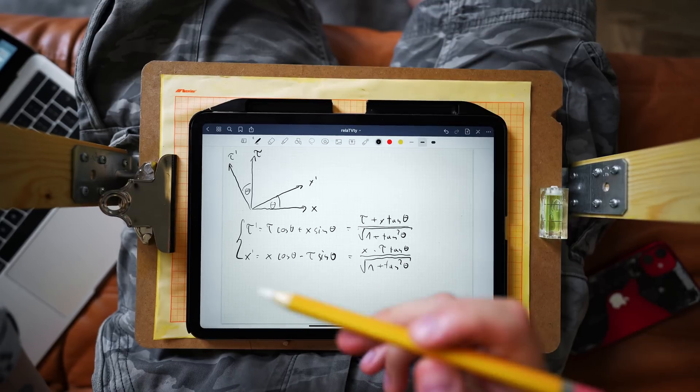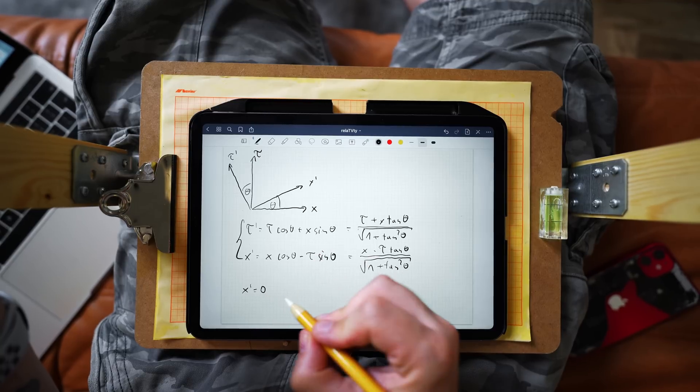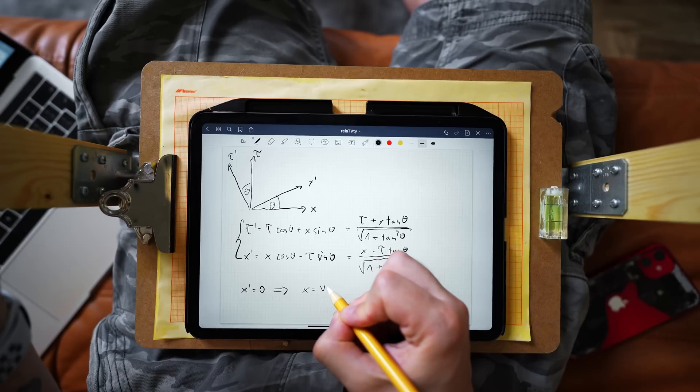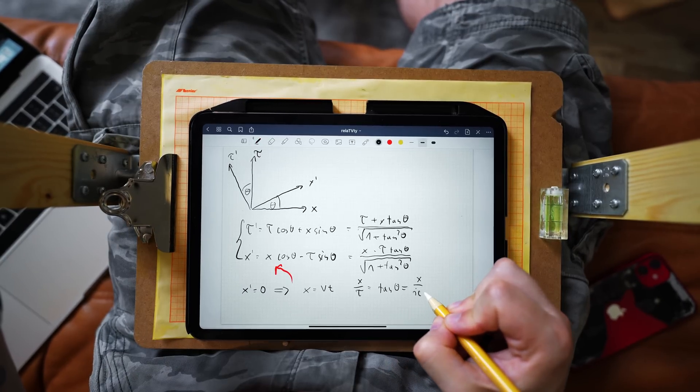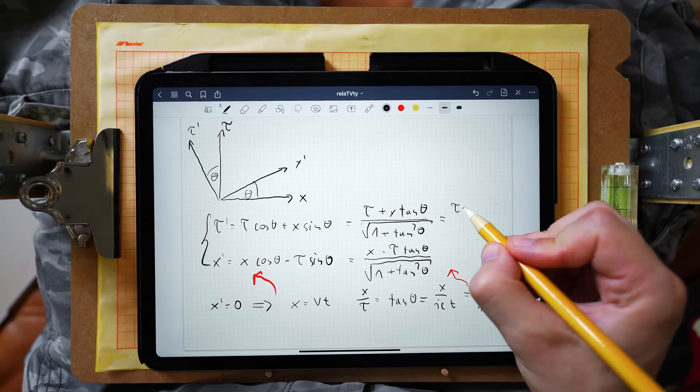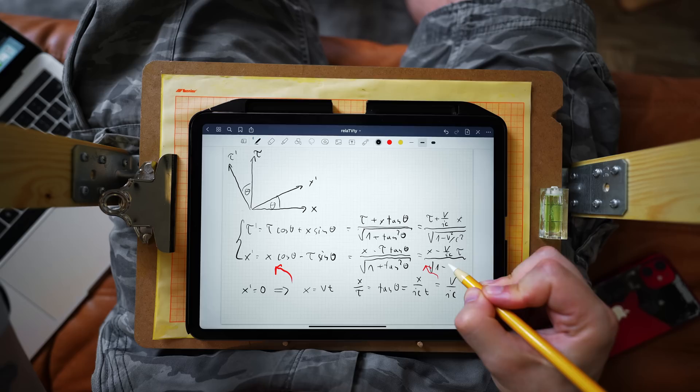Alright, so the next question is, what is this angle theta that appears in our equations? How does it relate to anything real? And it has to do something with the velocity, a relative velocity between the frames. And the next thing we want to do is to determine that relation. Now, the easiest way to relate theta with v is by saying that the origin of the moving frame of reference, given by the point x' equal to zero, is moving in the rest frame according to the formula x equals v times t. And if you plug in both of those expressions into the second equation, we get the following relation between theta and velocity, which we can now plug in into the set of equations that we have. And that starts to look quite familiar.